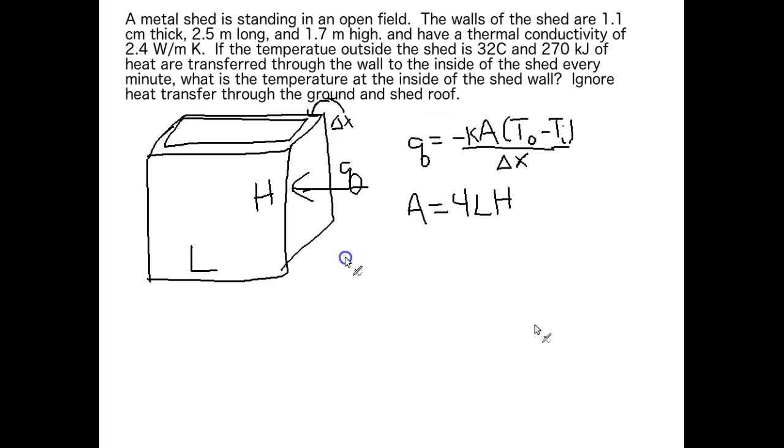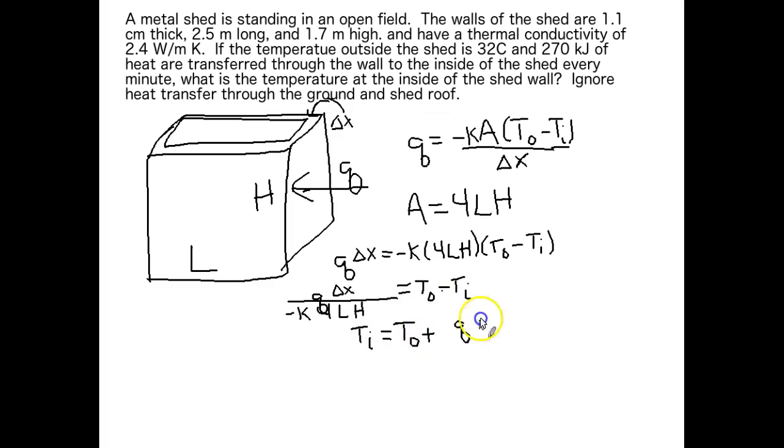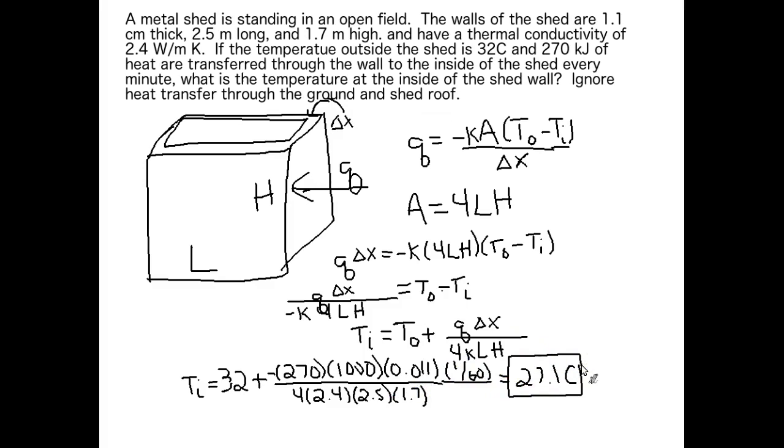Alright, we're all set. We have everything we need to solve the problem. Before we start plugging in numbers though, let's rearrange to get TI by itself. There we go. Now TI is by itself. Now we can plug everything in and solve for TI. Let's do that. Okay. The answer is 27.1 degrees C.